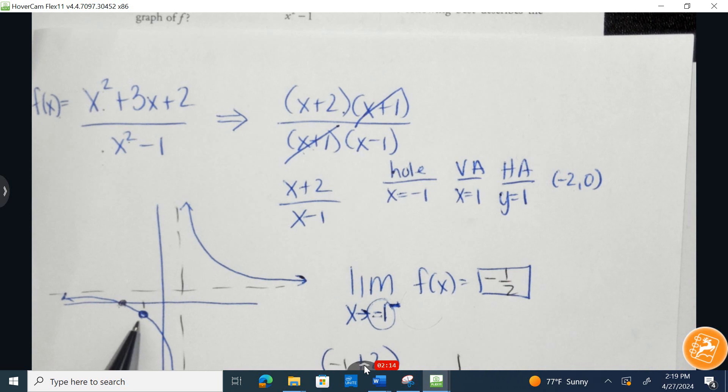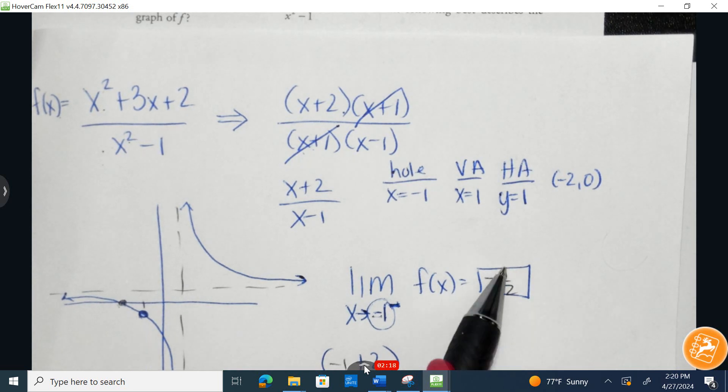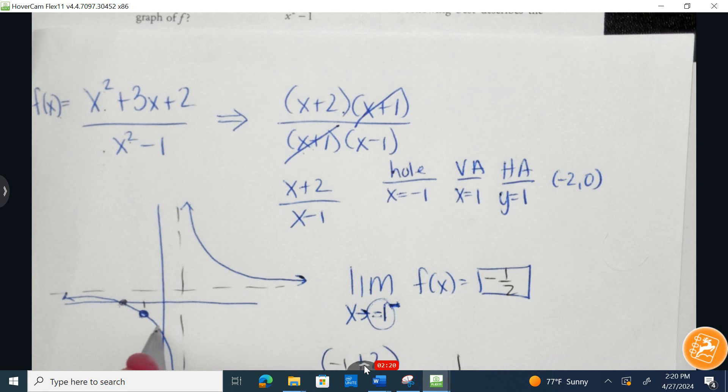And so this tells you that this is going to approach an output value or a y value of negative 1 half, and that looks about right. There's about negative 1 half as we approach an x value of negative 1 from the left-hand side.